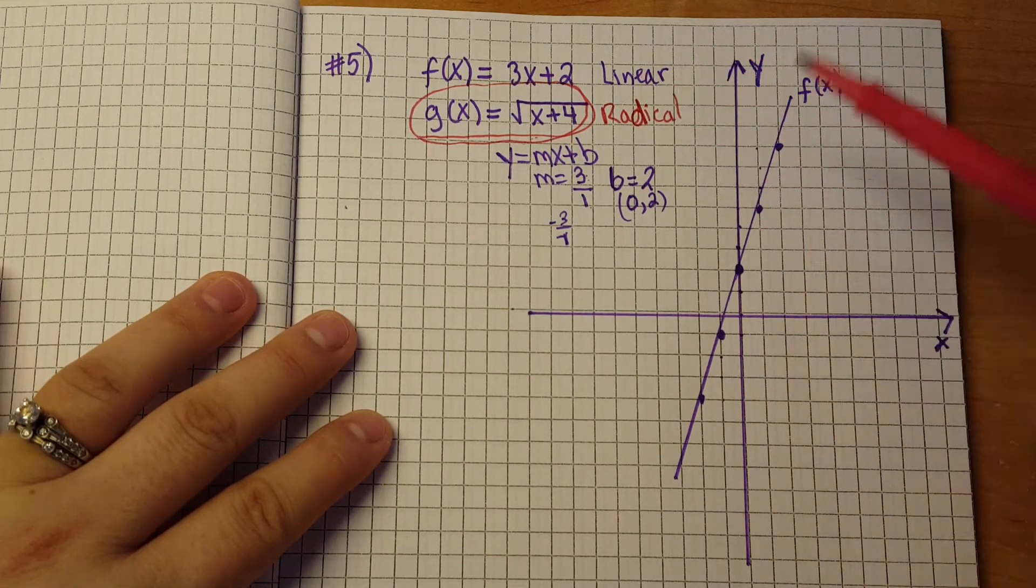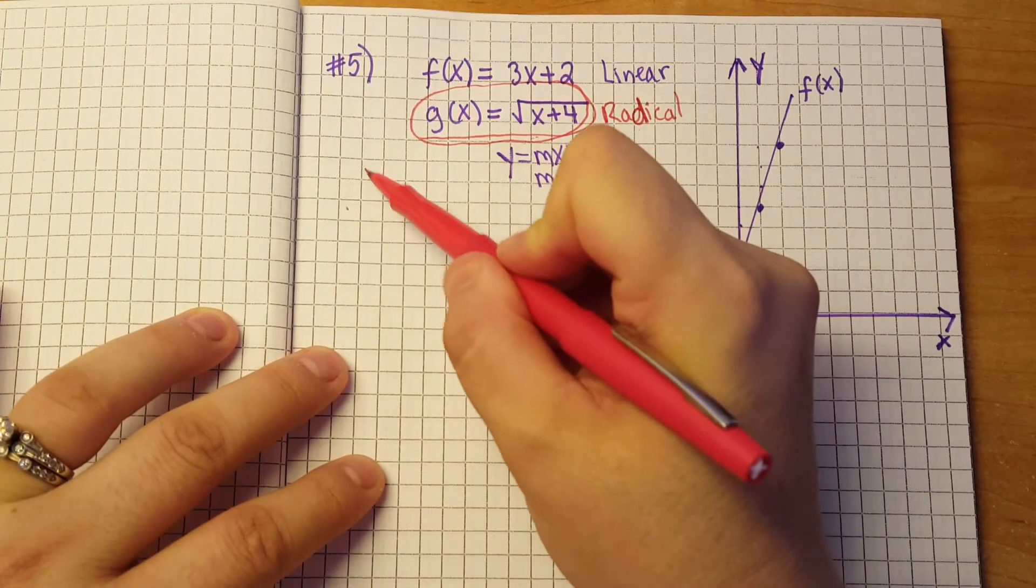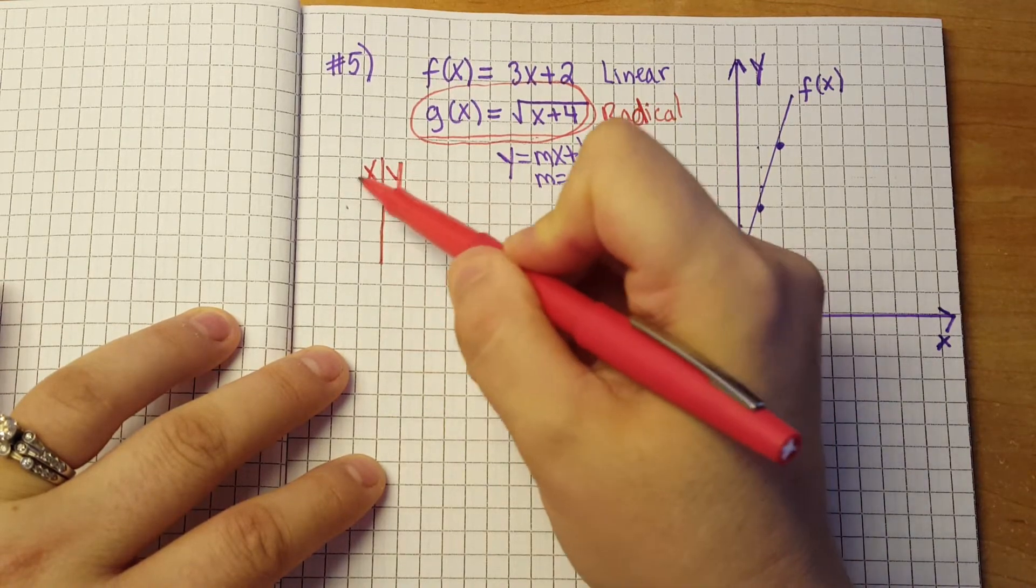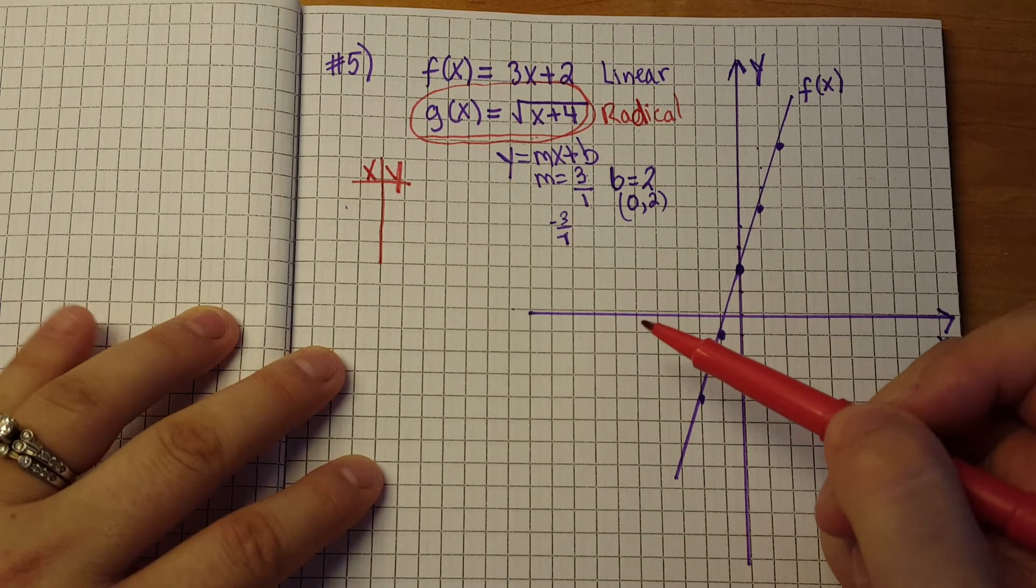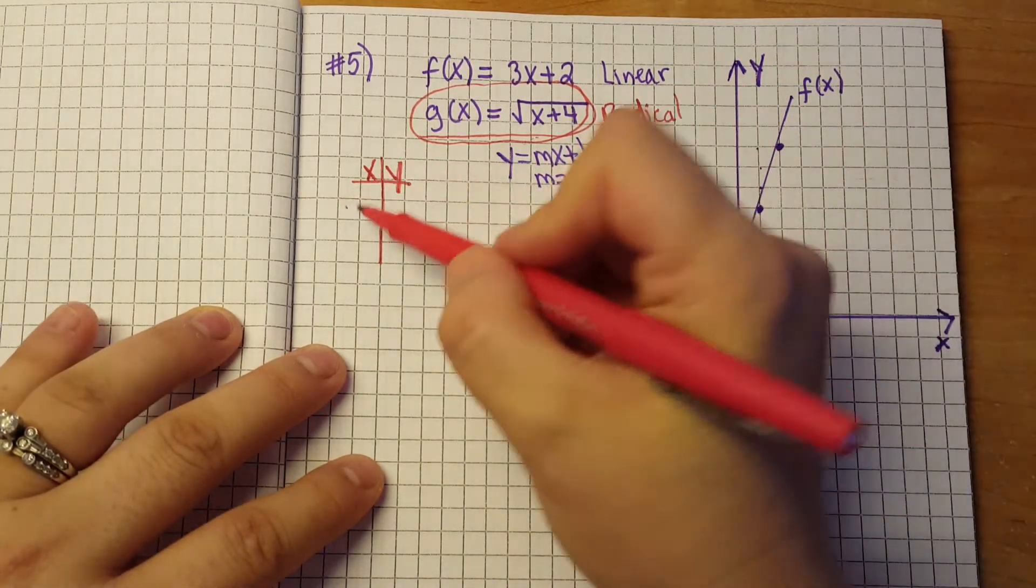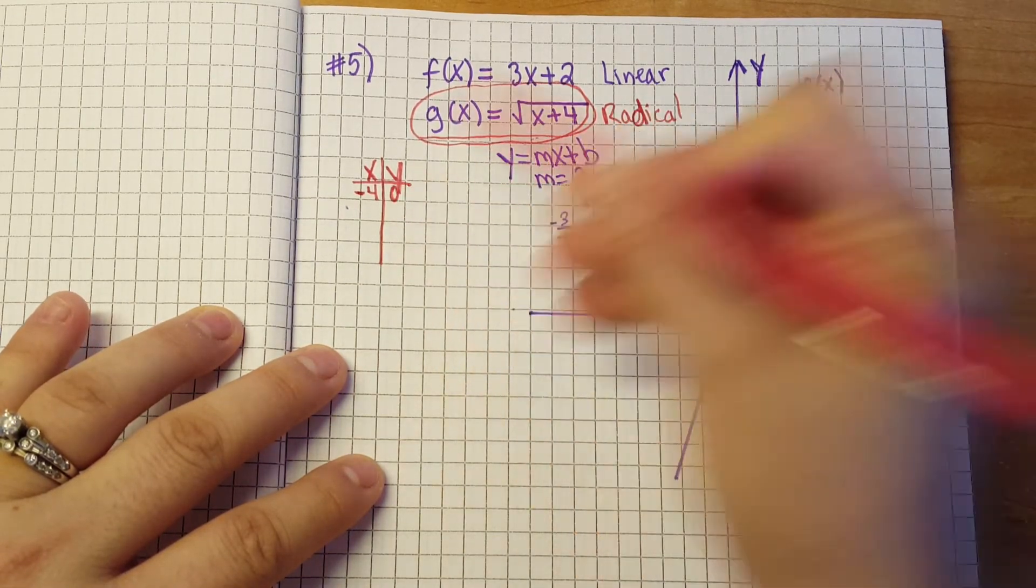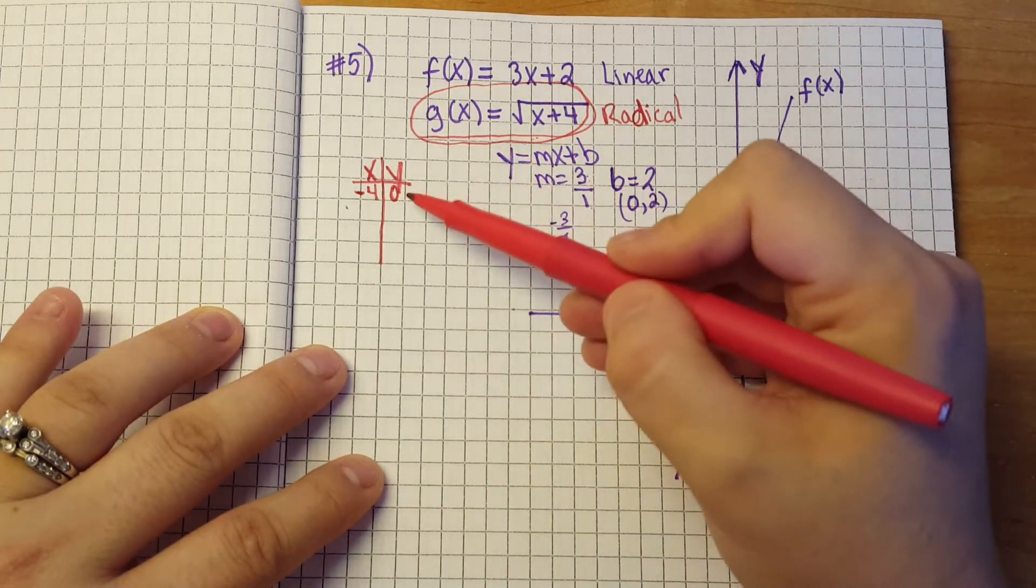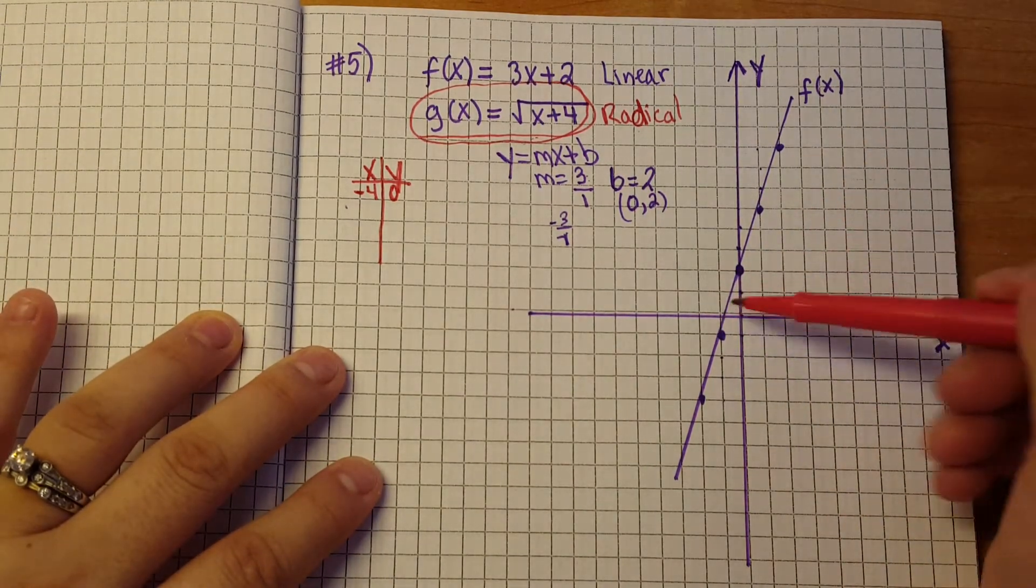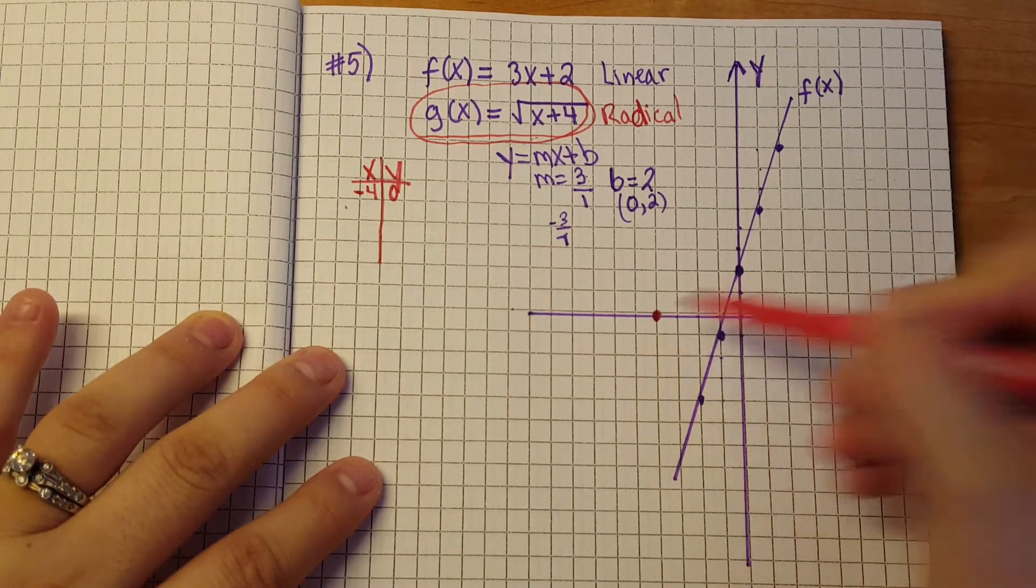So we can do this using an x and y chart and have our starting point. Remember we have a starting point where we take the opposite of what's inside that radical. So that's going to be negative 4, 0 because there is no number on the outside so that's a 0. So at negative 4, 0 we are at negative 4 so we're at 1, 2, 3, negative 4, 0 we're right here.